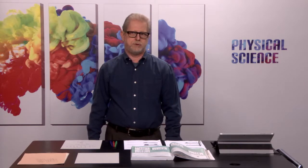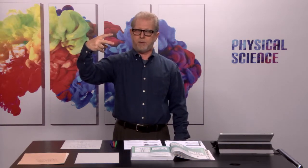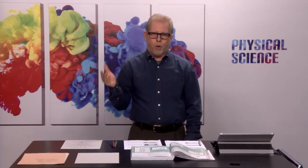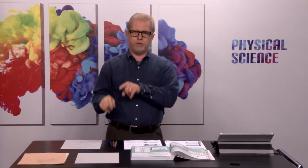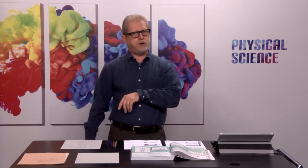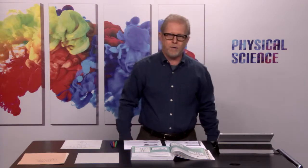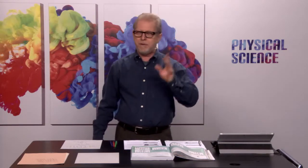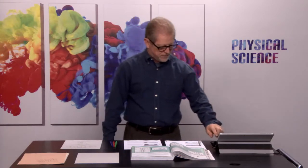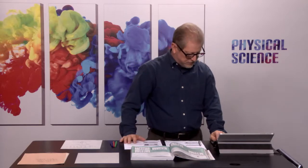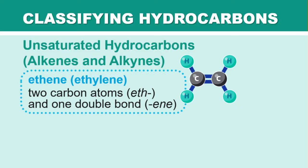For 2-butene, the double bond could also have been between carbons one and two — that would be 1-butene or 'but-1-ene'. You always use the lower number when naming. You don't need to memorize all these rules, but these questions naturally come up, so I'm giving you the answers.